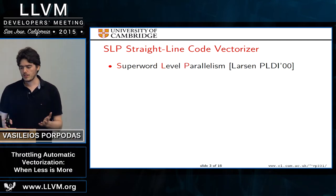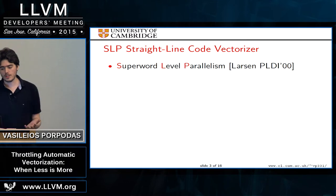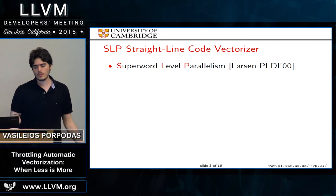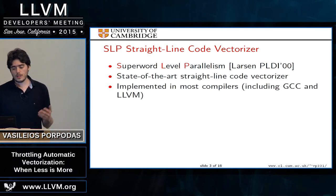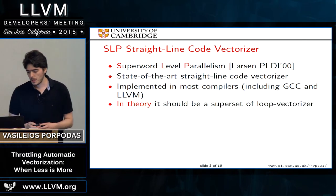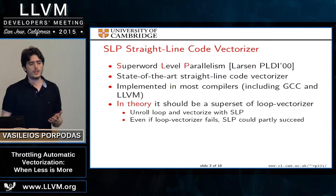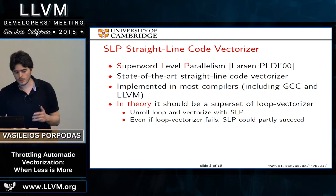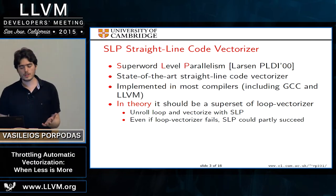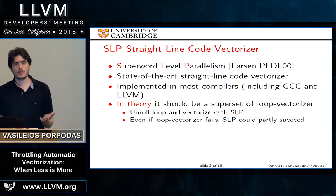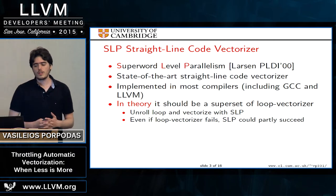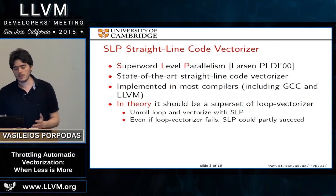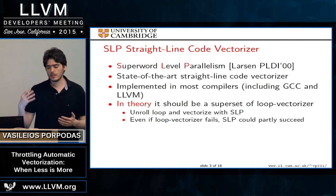TSLP's name comes from throttling plus Super Word Level Parallelism — the straight-line code vectorizer present in many compilers including open-source ones like GCC and LLVM. In theory, SLP should be a superset over the loop vectorizer: you could unroll a loop and feed it to SLP for vectorization. SLP can also partially vectorize loops with complicated control flow that the loop vectorizer cannot handle, vectorizing some basic blocks to gain better performance.